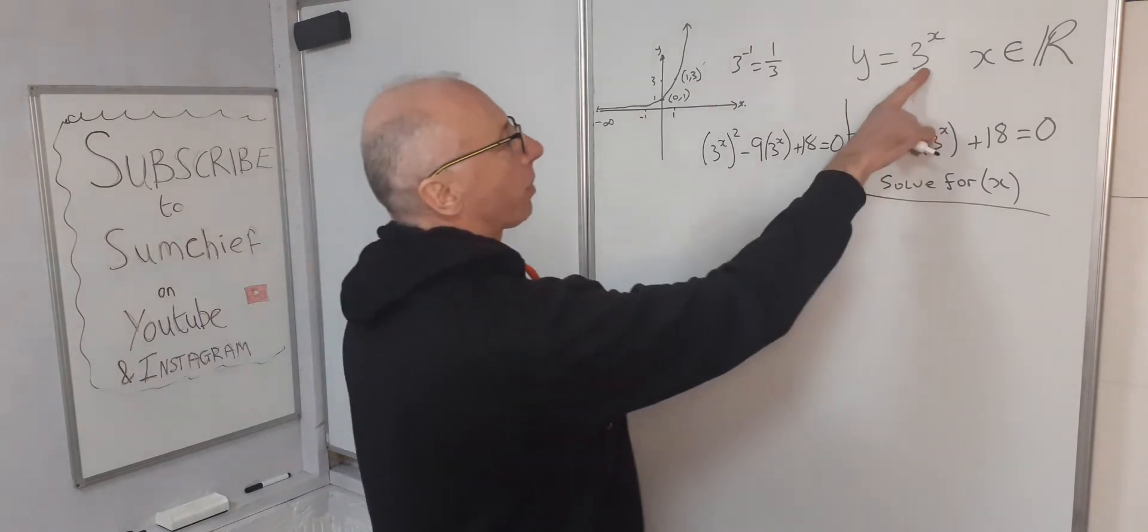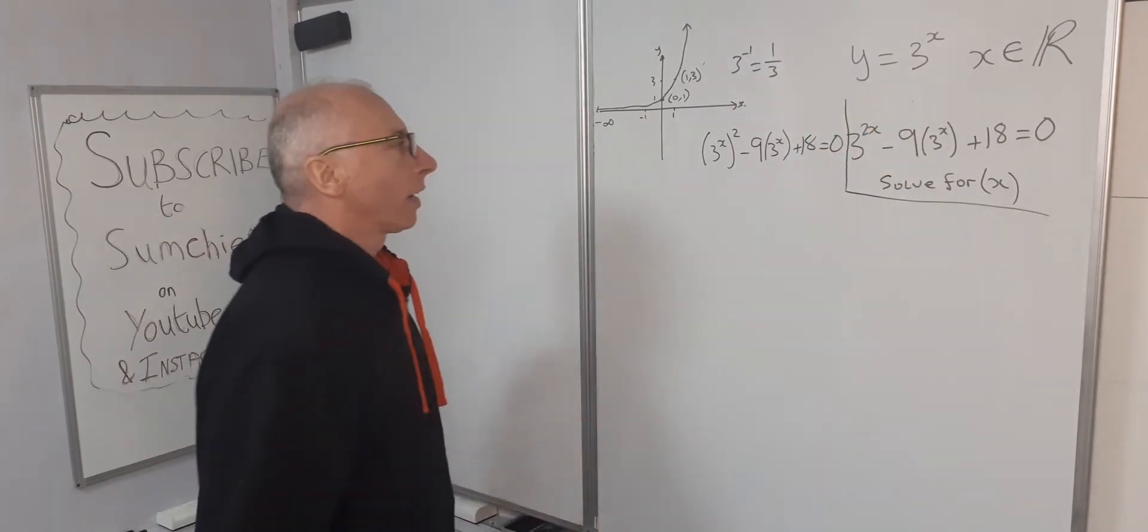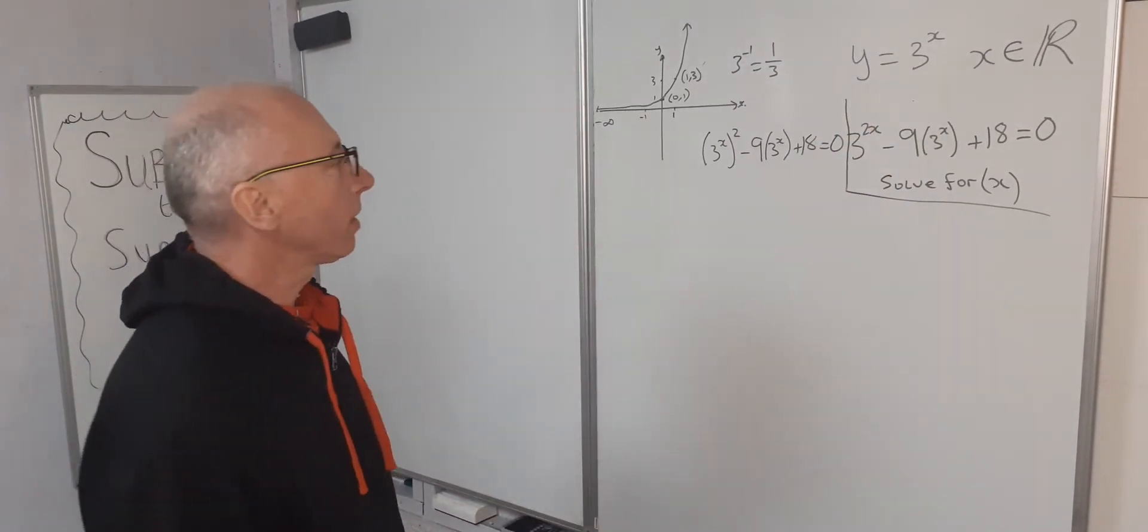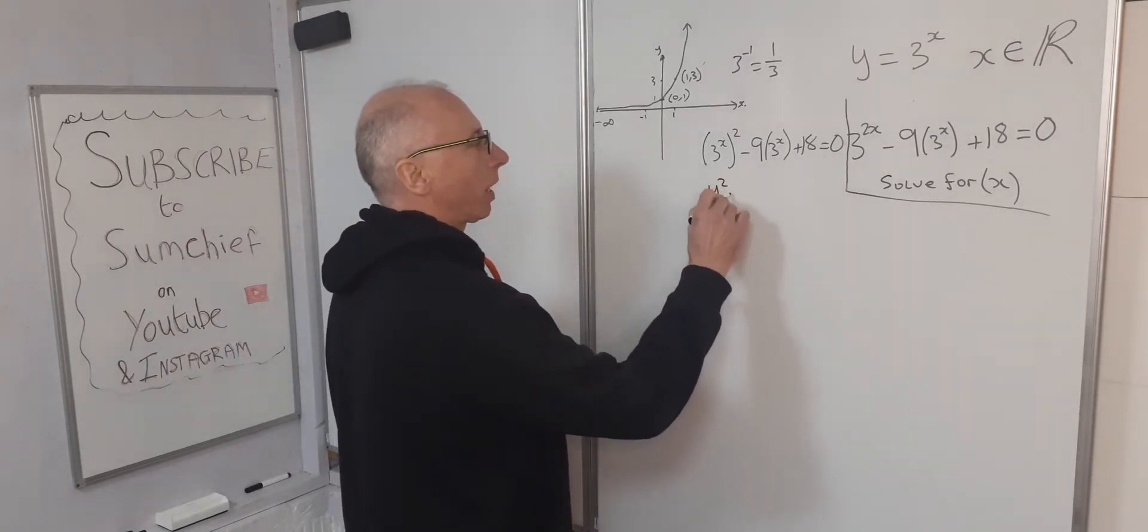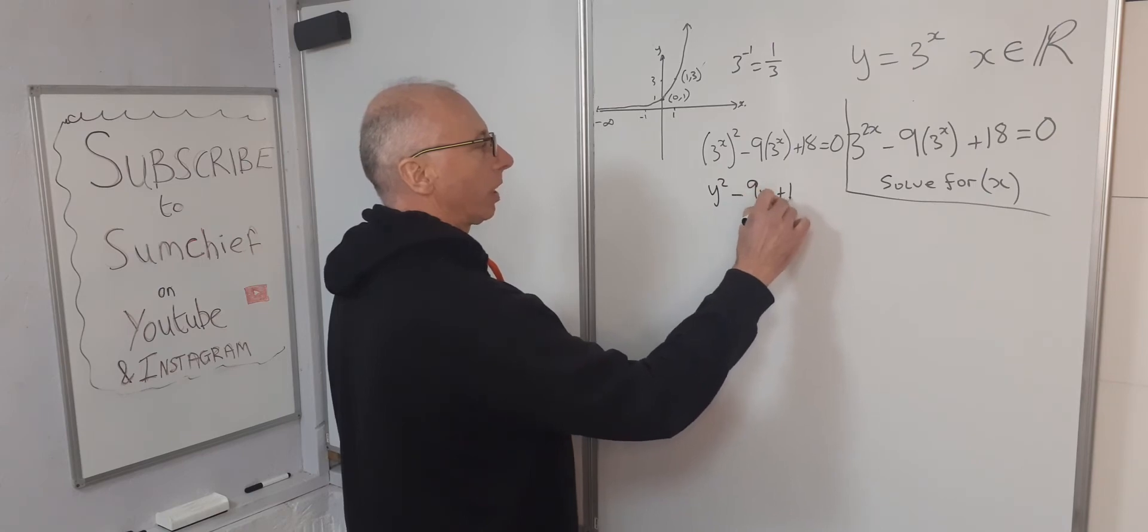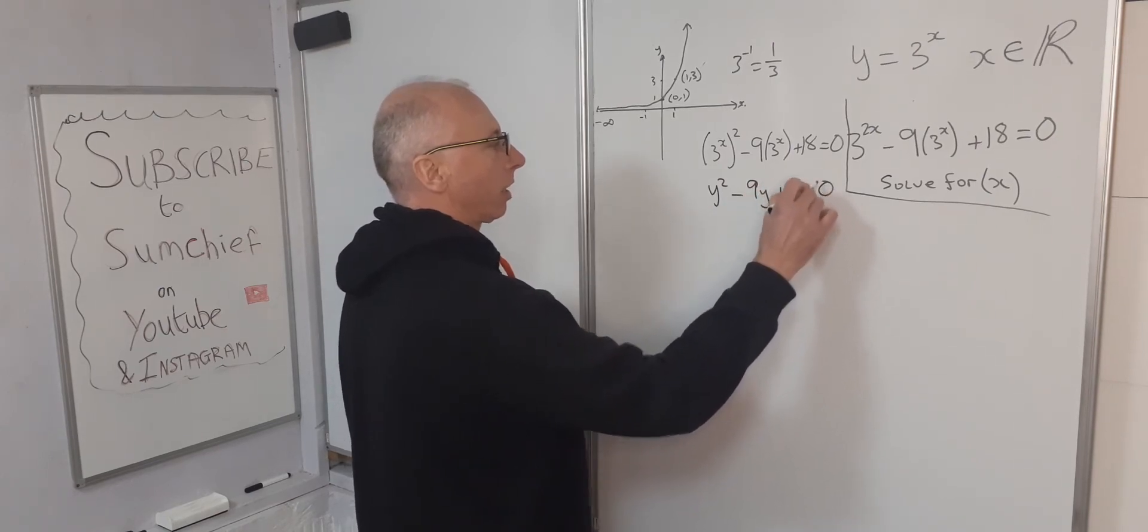Now we're given here that 3 to the power of x we can say is y. So let's just plug that in and see if that helps us. So we get y squared minus 9y plus 18 equals 0.